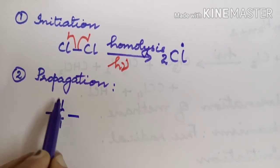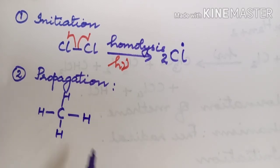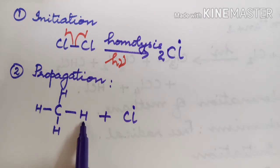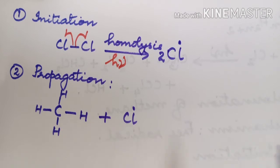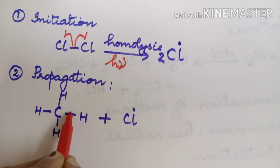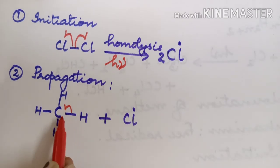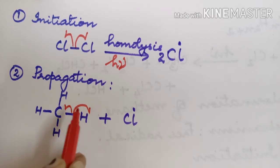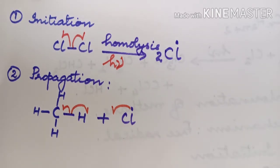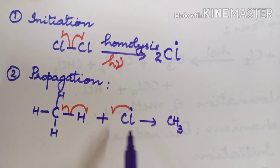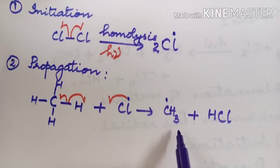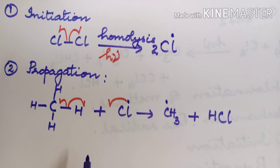In the propagation step, the free radical attacks the alkane, which here is methane, written as CH4, with four sigma bonds ready to be attacked. One of the chlorine free radicals attacks the C-H sigma bond. Homolysis occurs: one electron moves toward carbon and one toward hydrogen. The hydrogen electron combines with Cl to form HCl, and you get CH3 — the methyl free radical — plus HCl.